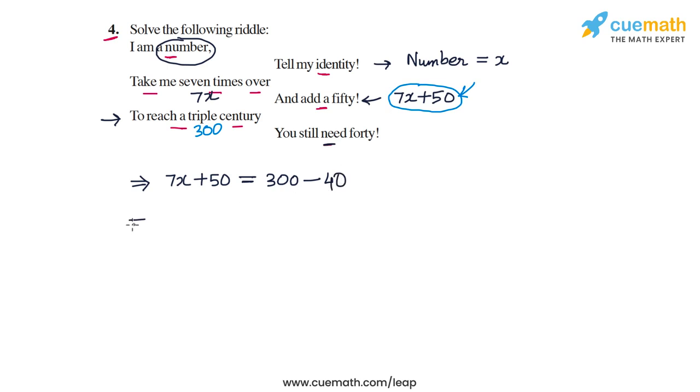So, that's awesome. Now, we have an equation in x. We can now solve it easily to find the value of x. So, 7x plus 50 is equal to 300 minus 40, which is 260.